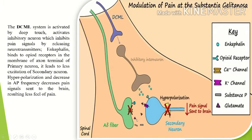This reduction leads to less excitation of the secondary neuron, hyperpolarization, and a decrease in action potential frequency, which decreases pain signals sent to the brain. Enkephalin also binds to the membrane of the cell body or dendrites of the secondary neuron and causes opening of potassium channels. This also leads to hyperpolarization of the secondary neuron and a decrease in action potential frequency, causing less pain signals sent to the brain.